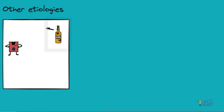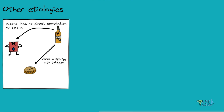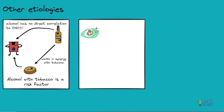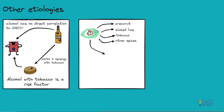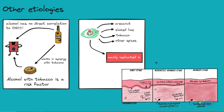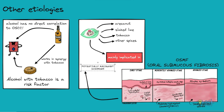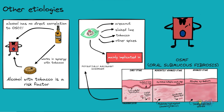Though alcohol does not have a direct correlation, it is reported to work in synergy with tobacco in causing oral squamous cell carcinoma. Alcohol in combination with tobacco is a considerable risk factor. Betel quid consists of a betel leaf that wraps a mixture of areca nut, slaked lime, tobacco, and other spices. Betel quid chewing is mainly implicated in causing oral submucous fibrosis, which is classified as a potentially malignant disorder and is estimated to have a 7–13% rate of malignant transformation.